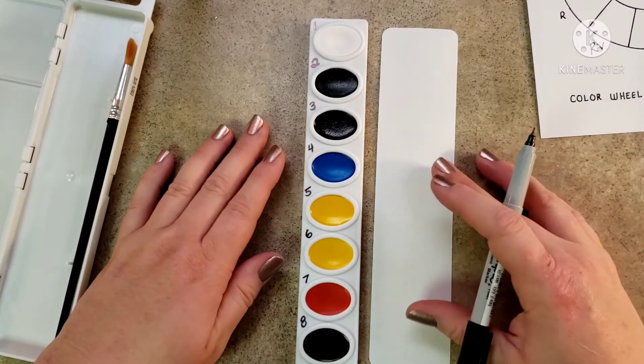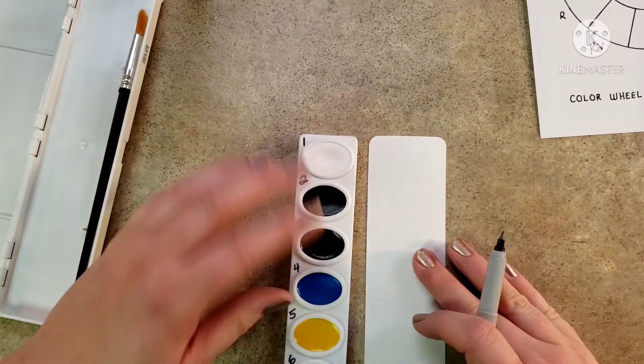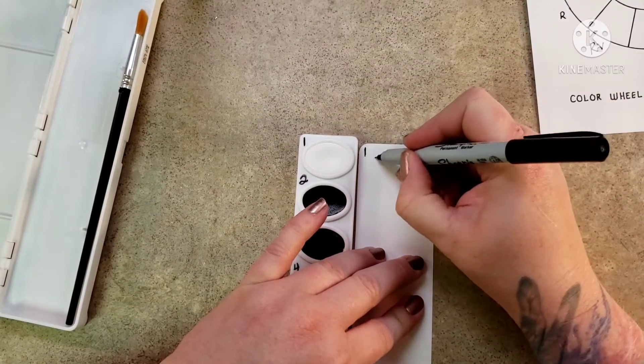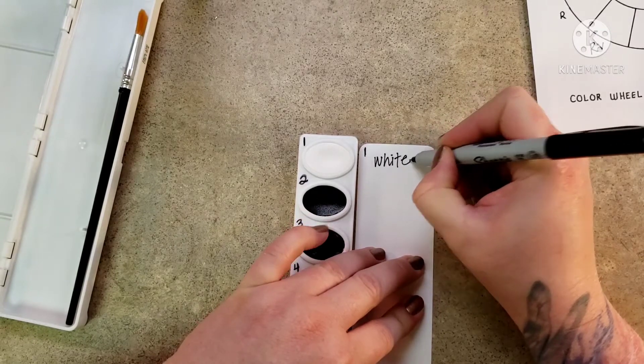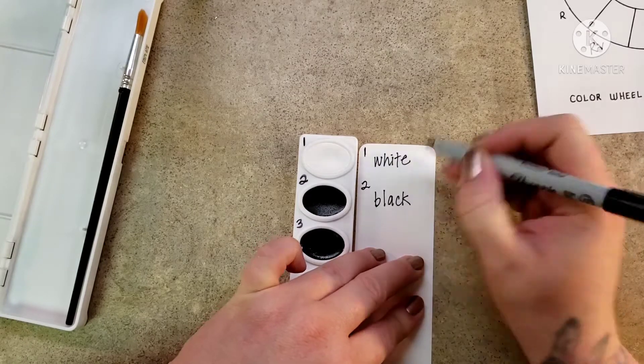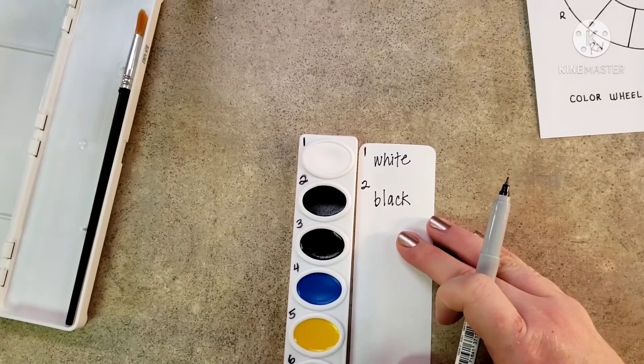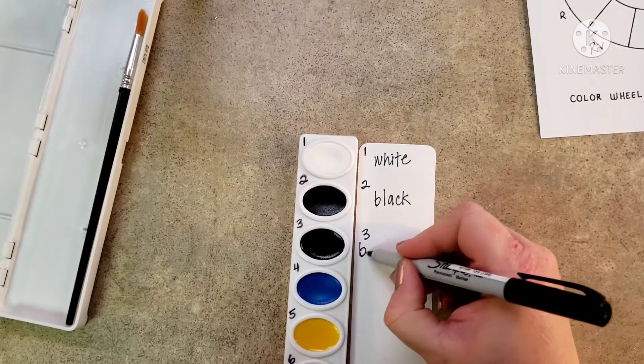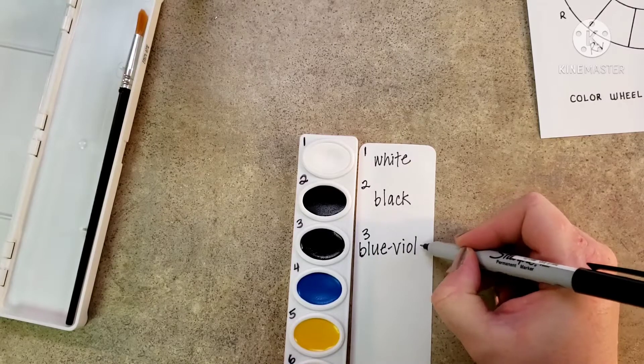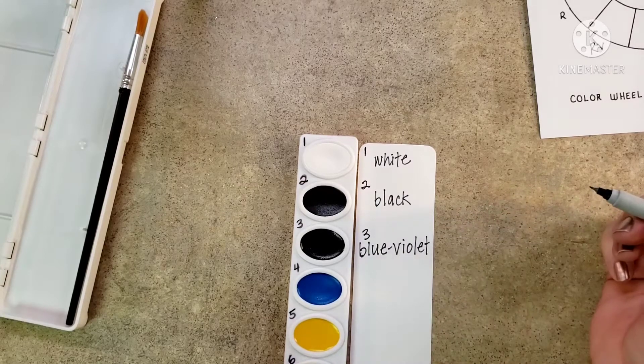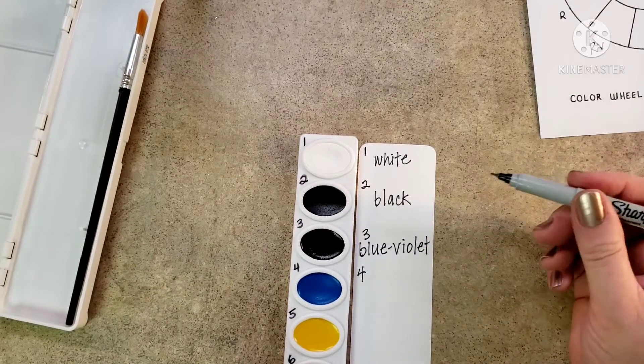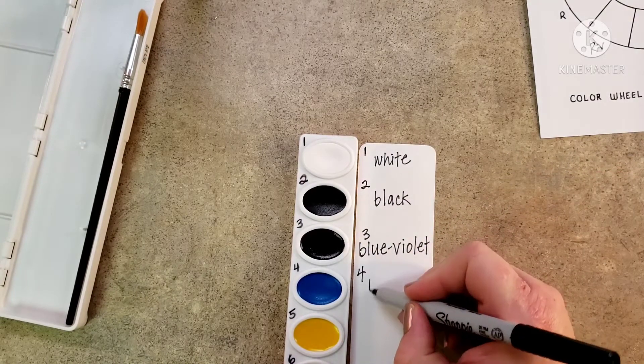Starting at the top with number one: number one is white, number two is black, number three is blue violet. Now you'll notice that this is not a traditional set of colors, this is an educational mixing palette. Number four is blue.